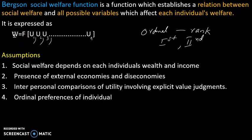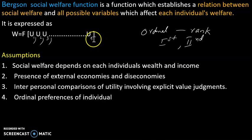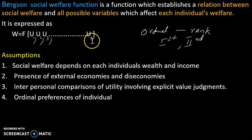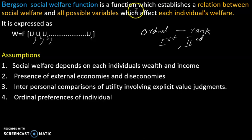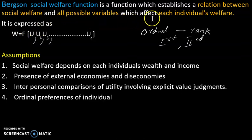The social welfare function expresses social welfare as a function of the utilities of all individuals in society, up to the Nth person. The Bergson social welfare function establishes a relation between social welfare and all possible variables which affect each individual's welfare.